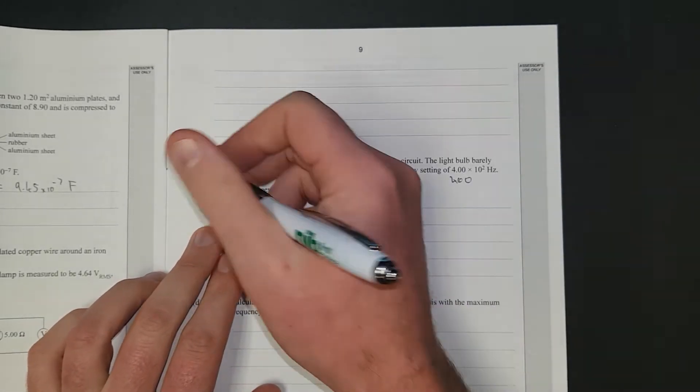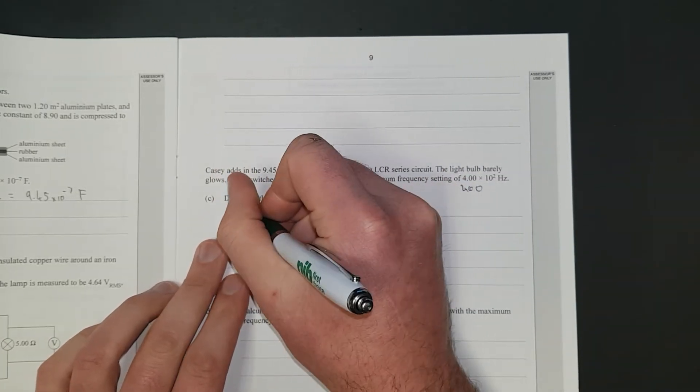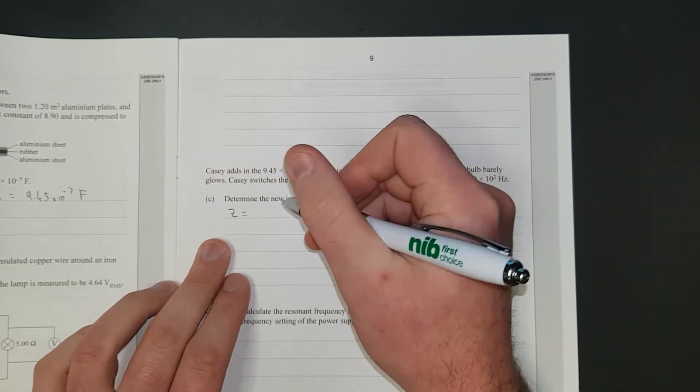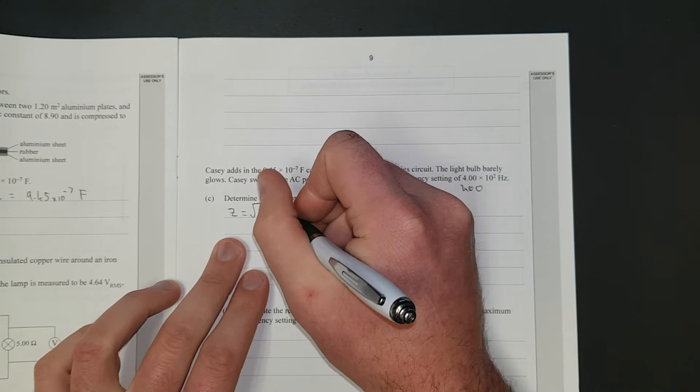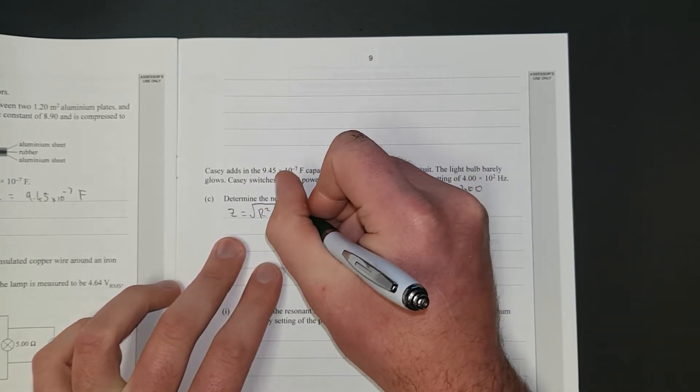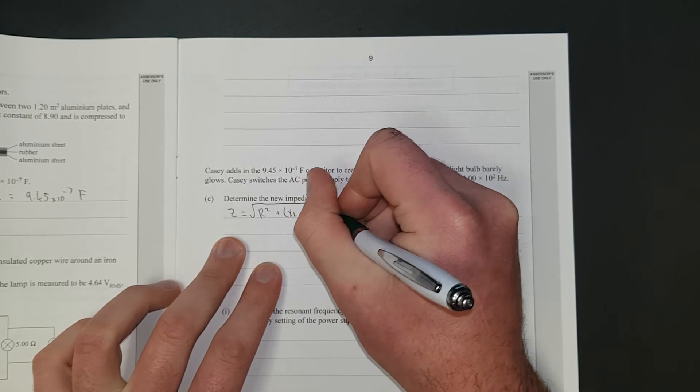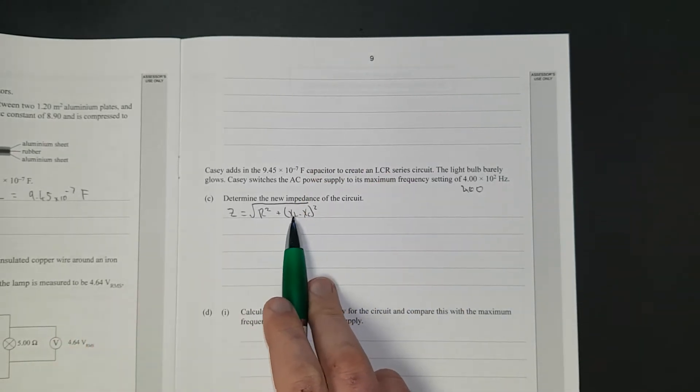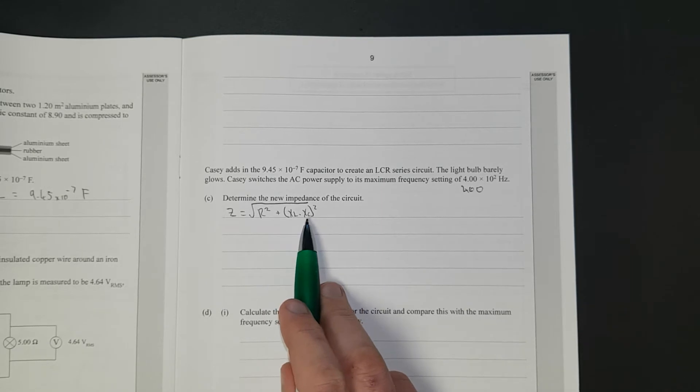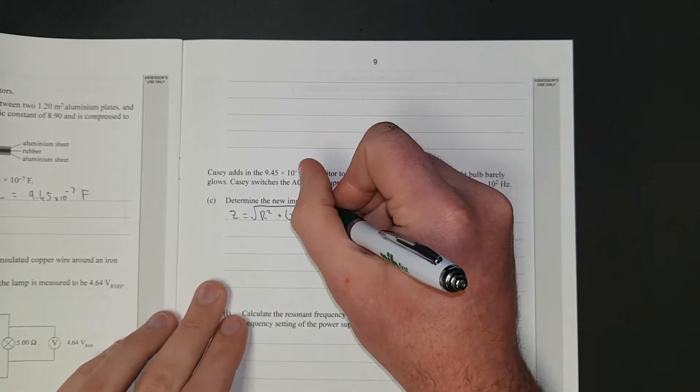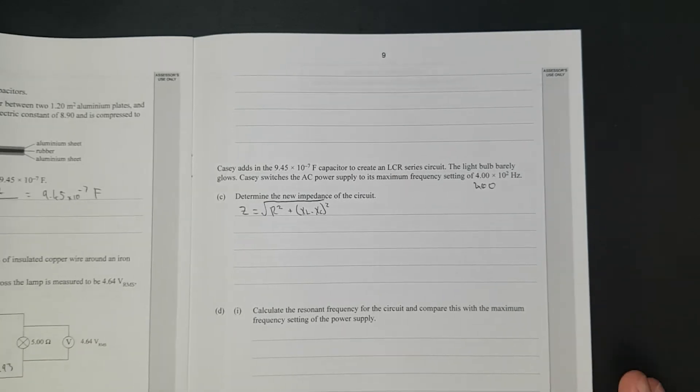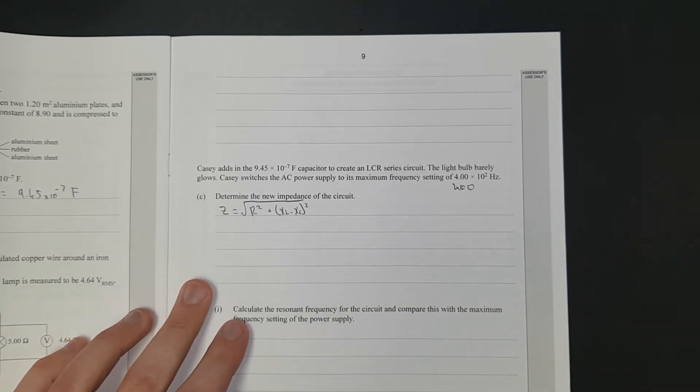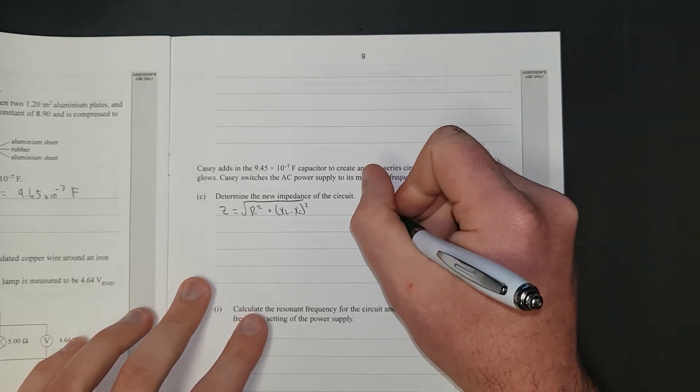Determine the new impedance of the circuit. Impedance is Z. This is something you have to memorize, or you can be sneaky and write it on your hand. It's pretty easy to remember. It's the square root of R squared plus, now this doesn't matter, XL minus XC. It could be the other way around, it doesn't matter because it's just the difference between your reactances of the capacitor and the inductor squared. I'm not going to draw a phasor diagram because I don't think I need to.